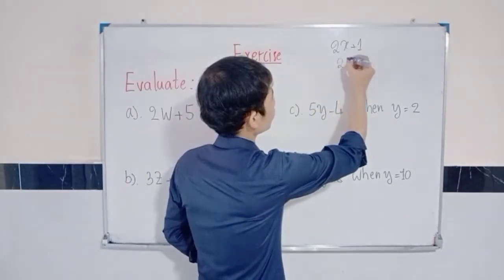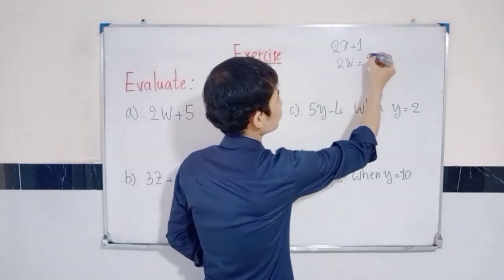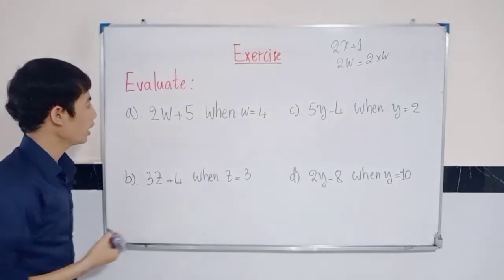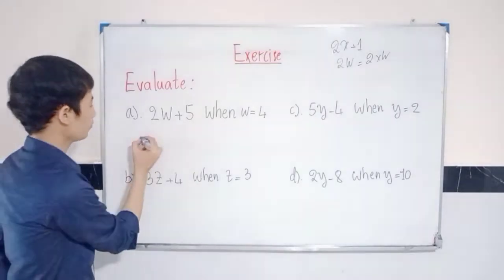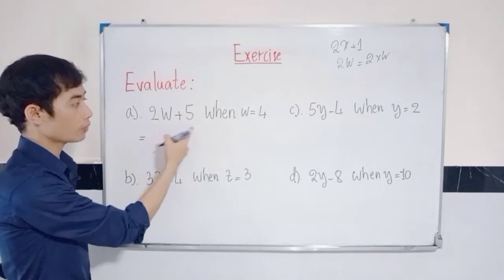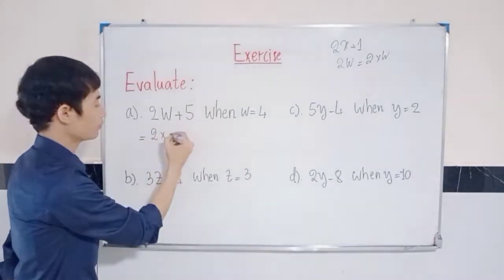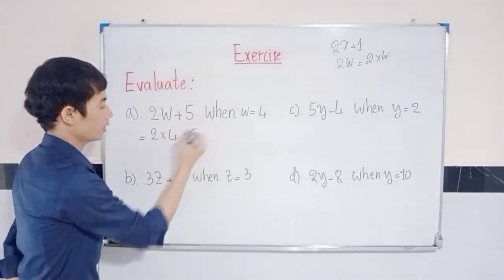And now 2w, what does that mean? 2w is equal to 2 times w. After you substitute the value, you get 2 times w, 2 times 4 plus 5.